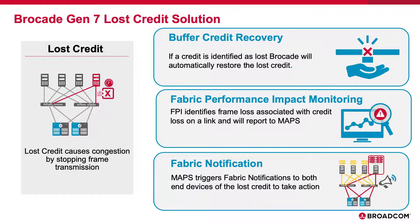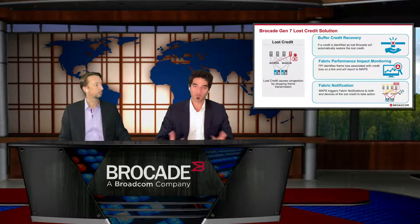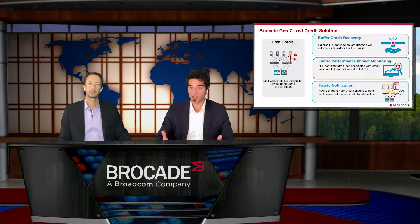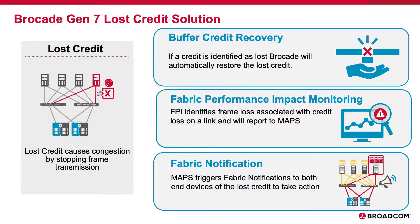What have we done differently now with Gen 7? There's a latest feature around fabric performance impact notification. The big difference with fabric performance impact notification is that we can now notify the devices about what the fabric sees as the issue, and then tell the devices to take a corrective action. When it comes to lost credits, for example, we can tell the device it is the reason for a lost credit, and then the device can basically replenish that credit directly.